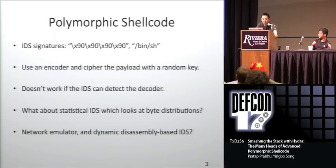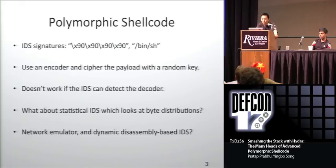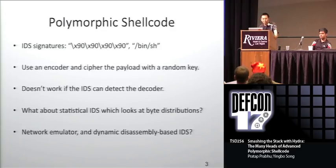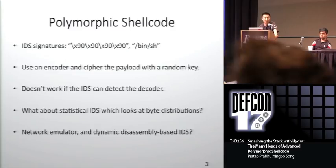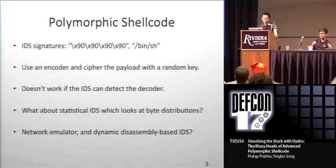So polymorphic shellcode — why do we need it? It's because IDS signatures for shellcode are easy to write. For example, you can detect a string of hex 90s and that's your basic no-op sled. You can look for '/bin/sh' and that's an indication you're trying to open a shell. Many polymorphic engines use an encoder to cipher the payload with a random key, but that doesn't work if your decoder is always the same — an IDS can just detect the decoder. So the decoder has to be polymorphic, it has to change every time. There are also statistical IDS systems that look at byte distributions, multi-gram byte distributions.